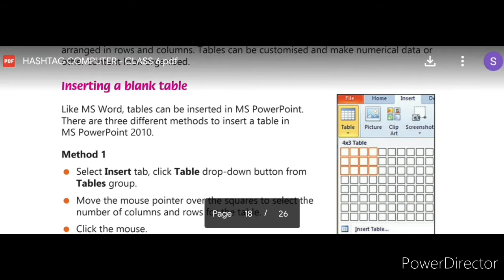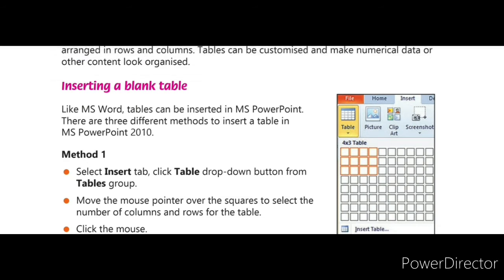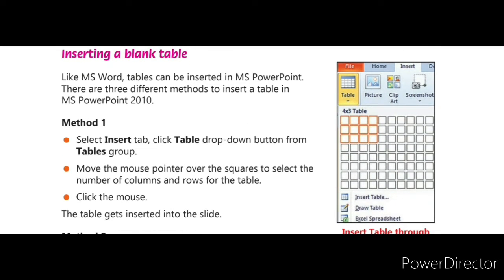Let us see the first method. Method one: Select the Insert tab. Click the Table drop-down button from the Tables group. Move the mouse pointer over the squares to select the number of columns and rows for the table, then click the mouse. This is the first method — inserting a table using the squares.